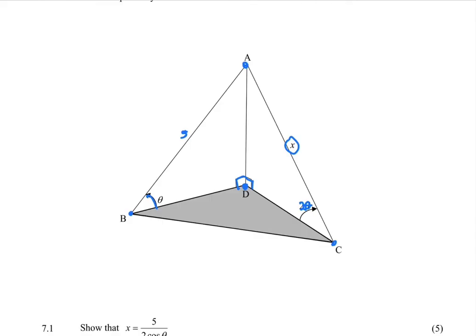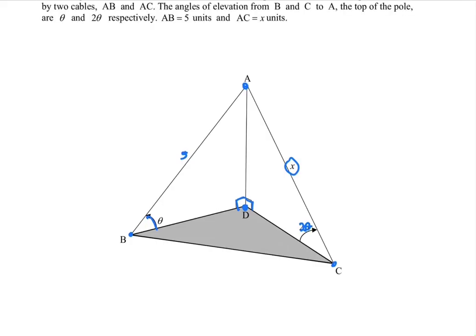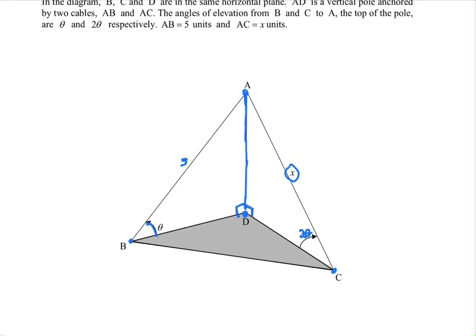So let's start from triangle ABD and move towards triangle ADC. How do we do that? The shared line between triangle ABD and triangle ADC is line AD. So let's find line AD using triangle ABD, and then from line AD we find a way to find X.